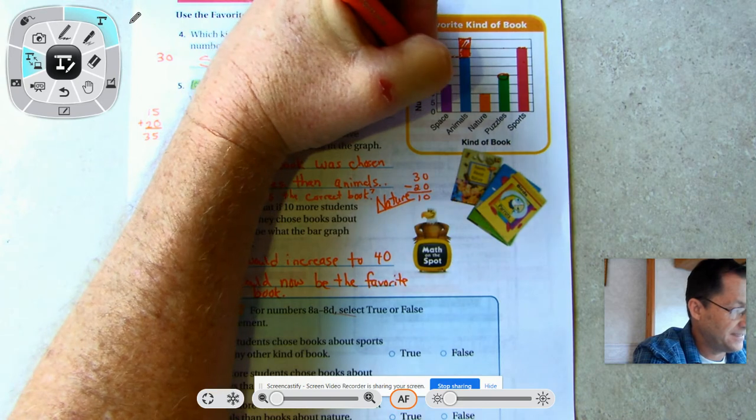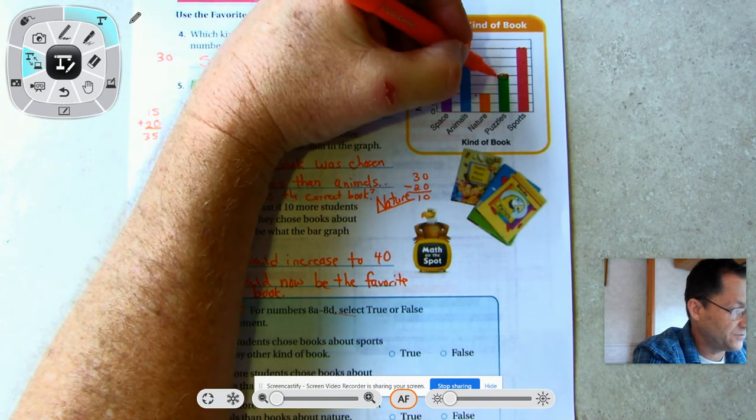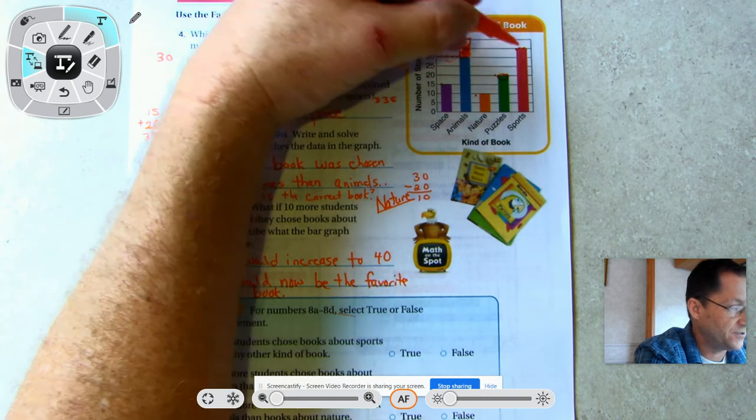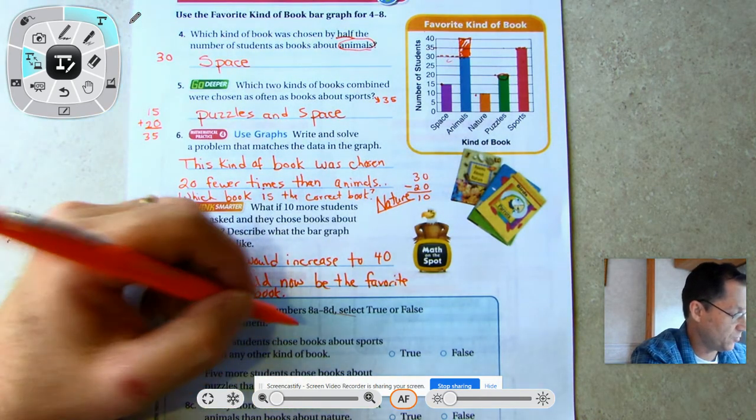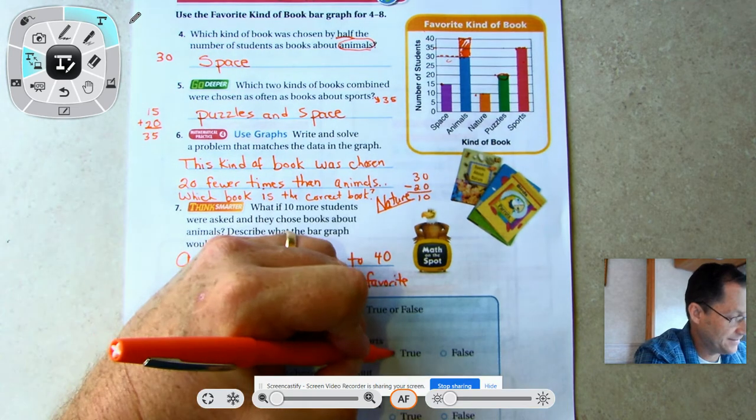Did more students choose books about sports than any other kind of book? Yes, that's true. Five more students chose books about puzzles than books about space.